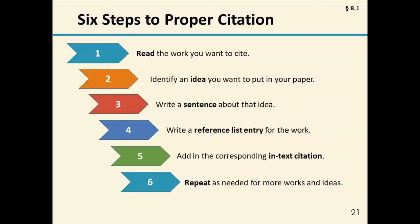Here is a summary of how we recommend citing. First, read the work you want to cite and identify the idea you want to put in your paper, then write a sentence about it — that might be paraphrasing or quoting directly. Then create the reference first, which will guide you on how to make the in-text citation using the author name and year. Then repeat. That was a quick run through the fundamentals of APA style references and citations, and now it's on to Chelsea to share some secrets.